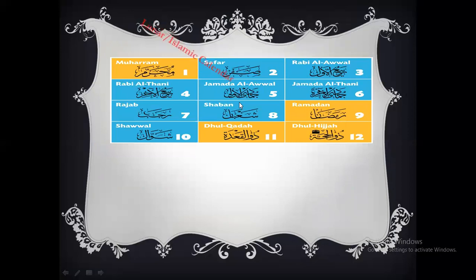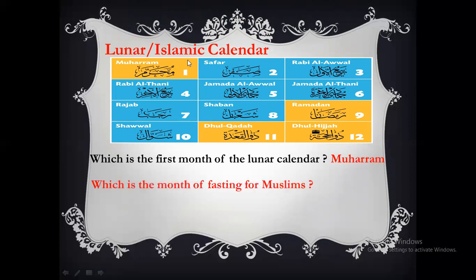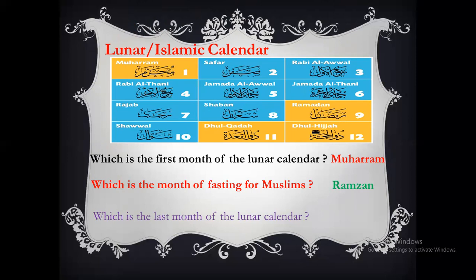Now look at this lunar calendar, or you can say Islamic calendar. Which is the first month of the lunar calendar? Yes, very good — Muharram is the first month of the lunar calendar. Which is the month of fasting for Muslims? Yes, very well done — Ramazan al-Mubarak. And which is the last month of the lunar calendar? Yes, Zilhaj. Very good.